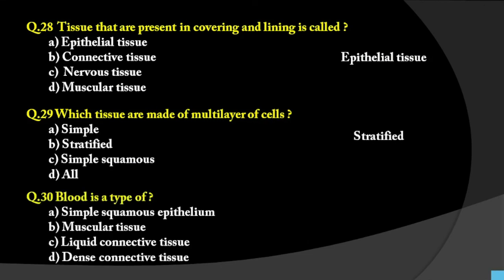Question number 30: Blood is a type of which tissue? Options are simple squamous epithelium, muscular tissue, liquid connective tissue, or dense connective tissue. Simple squamous epithelium is for covering and lining, muscular tissue forms muscles, dense connective tissue doesn't fit since blood is liquid. Since blood is liquid, the correct answer is liquid connective tissue.